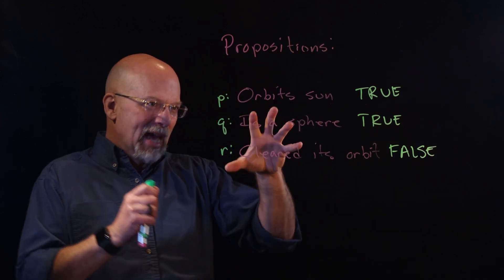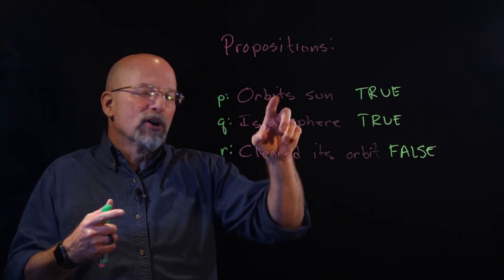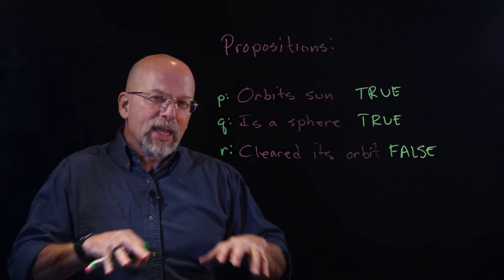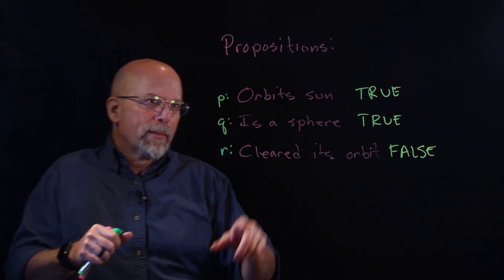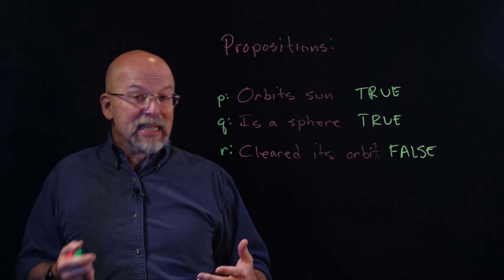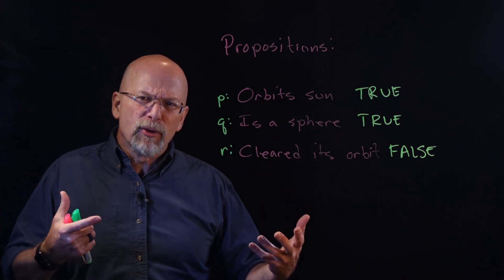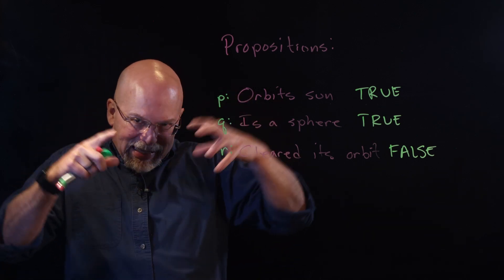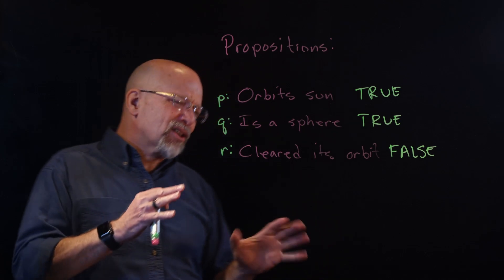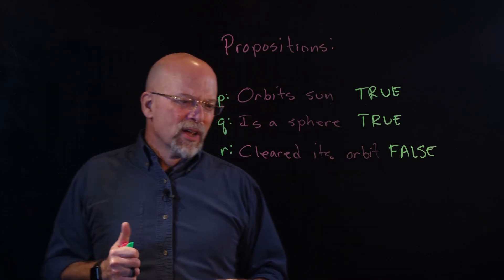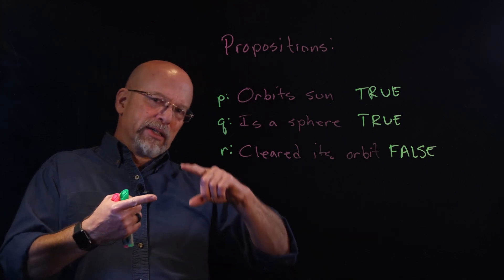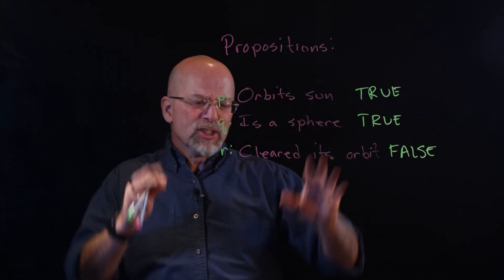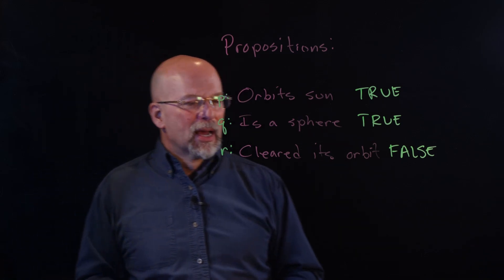Now something else that I want to look at. These guys could also be considered what we call atomic propositions. An atomic proposition means that it cannot be broken down into any simpler statements. For example, orbits the Sun—it either does or it doesn't. It doesn't require two or three other propositions. It can't be broken down. Clear its orbit could be considered not an atomic proposition because you could say something along the lines of has it cleared it of this particular object? But in general, these are what we would refer to as atomic propositions.